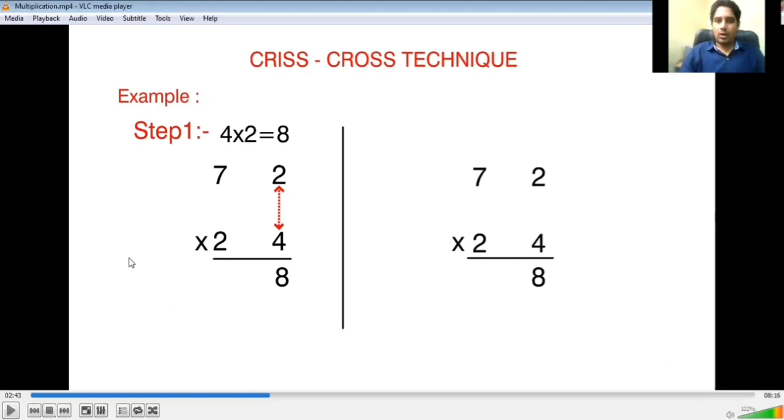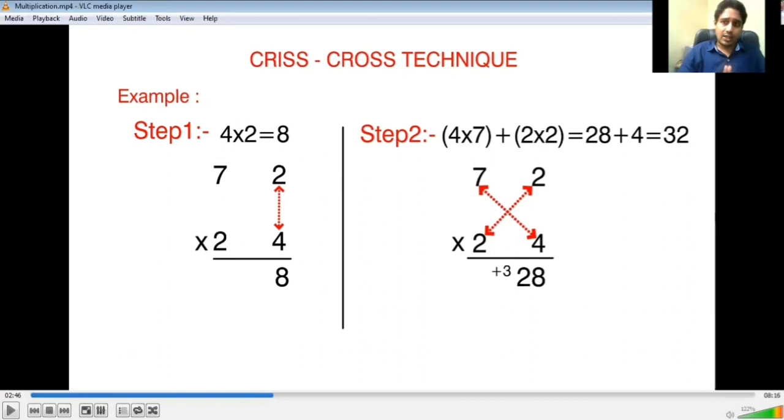Step two: 4 into 7 is 28, and 2 into 2 is 4. Then we add these two results: 28 plus 4 is 32. We will take down 2 and 3 will be carried forward. So we will take 2 and 3 will be carried forward for the next step.